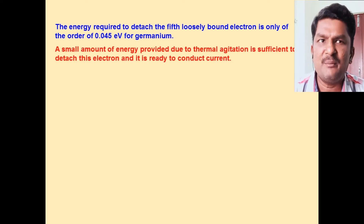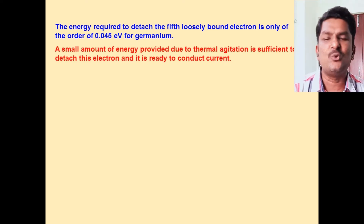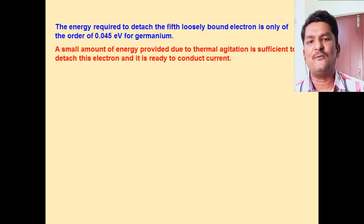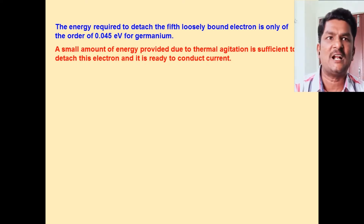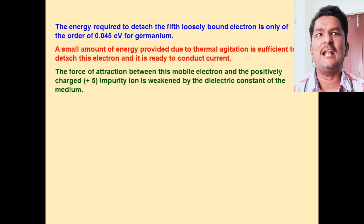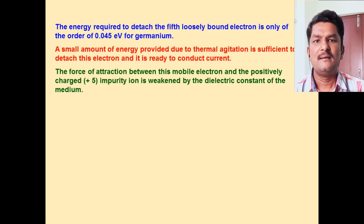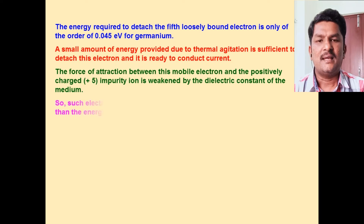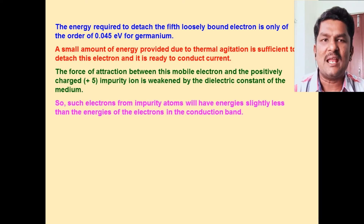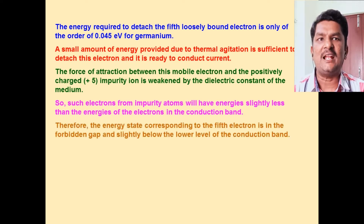In the case of germanium, the energy required to detach the fifth free electron is about 0.045 electron volt. With thermal agitation, if we give a little amount of energy, the fifth electron may detach.